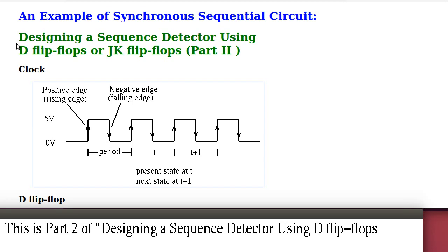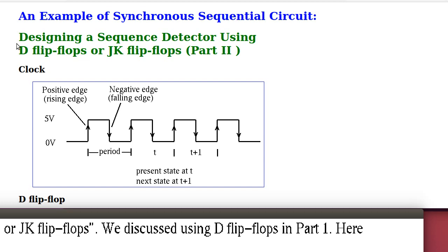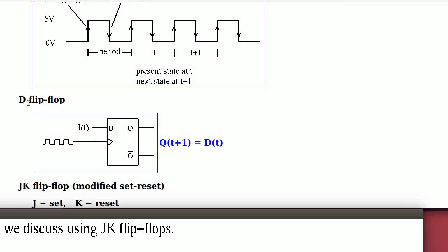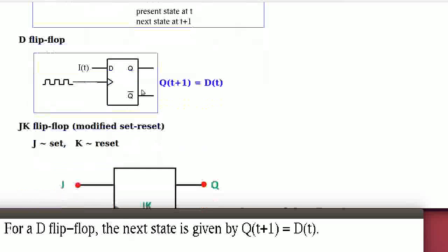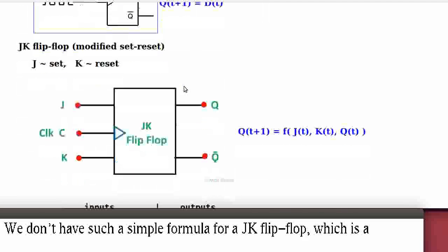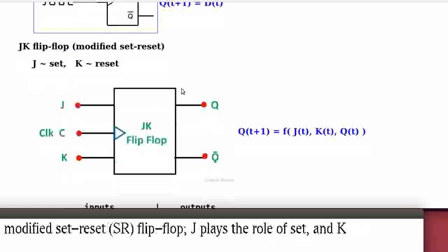This is part 2 of designing a sequence detector using JK flip-flops. We discussed using D flip-flops in part 1. Here we discuss how to do this using JK flip-flops. For D flip-flops, the next state is given by Q(t+1) equals D(t). We don't have such a simple formula for a JK flip-flop, which is a modified set-reset or SR flip-flop.